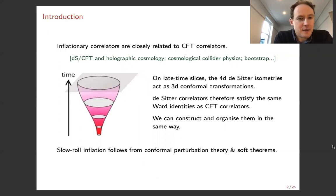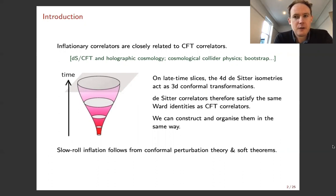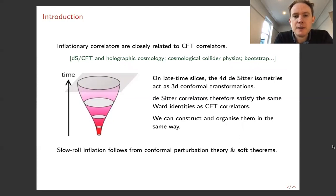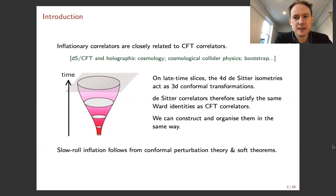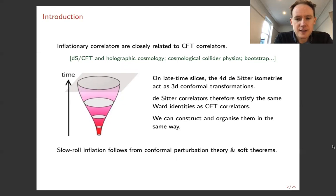Let's start with inflationary correlators. It's been appreciated for a very long time that inflationary correlators are very closely related to conformal field theory correlators. This is very natural from a holographic perspective but also from a purely kinematical perspective as has been emphasised in recent work. During inflation the space-time geometry is very close to de Sitter space, and we're interested in reconstructing cosmological correlators on constant time slices towards the end of the inflationary epoch. In exact de Sitter space, the four-dimensional de Sitter isometries act on these late-time slices as three-dimensional conformal transformations.